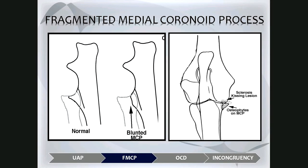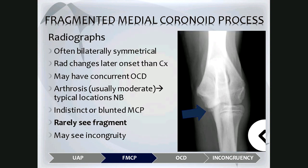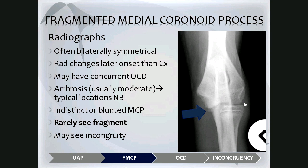On radiographs of fragmented medial coronoid process, it's important to obtain views of both elbows in case it is bilaterally symmetrical. Radiographic changes might lag behind clinical signs, so the dog may be lame before anything is visible. The medial coronoid process may be indistinct or blunted, and rarely the fragment is seen. An arrow here indicates a small round fragment sitting medially. Note that a mineralized opacity sitting laterally is more likely the sesamoid in the supinator muscle — don't confuse this with a fragmented medial coronoid process.